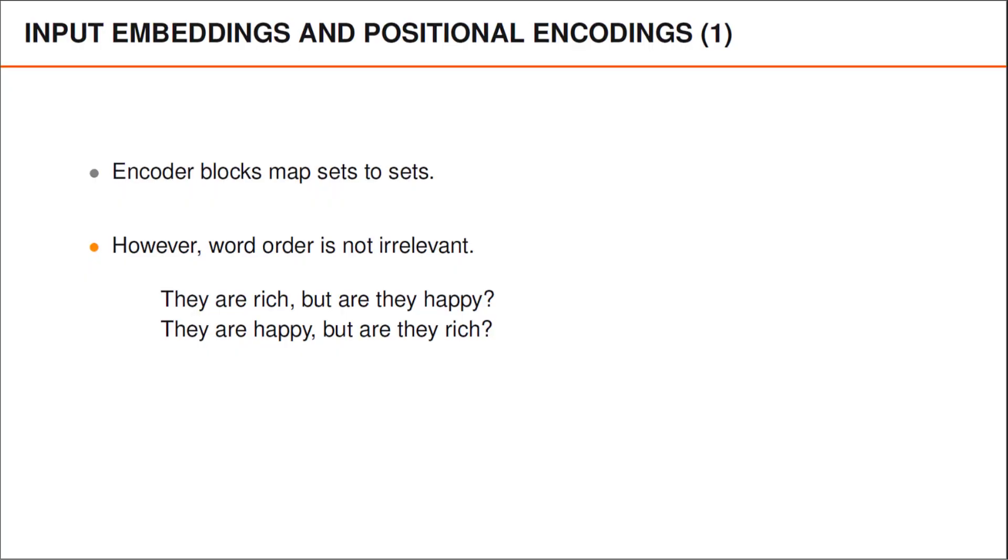For instance, it's easy to see that word order often matters. As an example, consider the following two sentences. They are rich, but are they happy? They are happy, but are they rich? Clearly, these sentences make different statements. But if we only consider the set of words that the sentences contain, they are identical. And this is problematic since the encoder only looks at the input as a set of vectors.